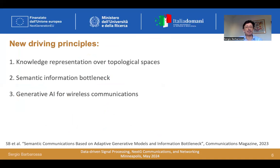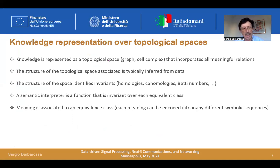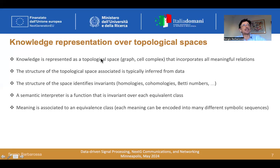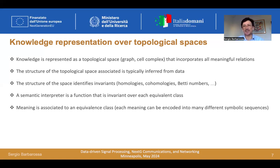Now, a few driving principles: knowledge representation over topological spaces, the semantic information model, and generative AI models for wireless communications. The essential point is that it is important to represent data over a topological space — possibly a graph, a complex, or a simplicial complex. In these spaces, we can use tools from algebraic topology to extract invariants, and invariants are associated with meanings. In a few words, the meaning is associated to an equivalence class, composed of all those sequences of bits that are interpreted in the same way to extract the semantics.